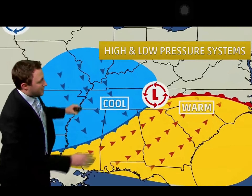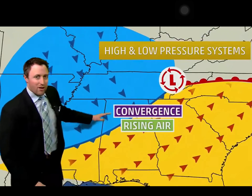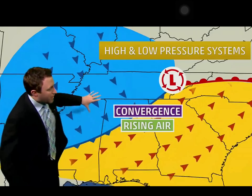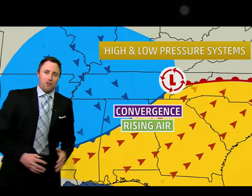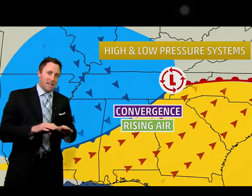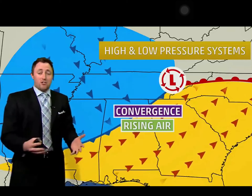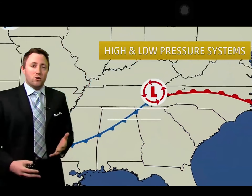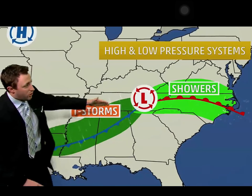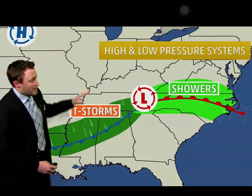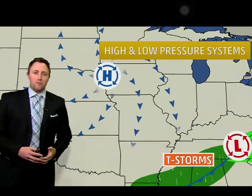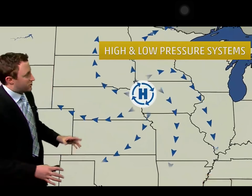Zooming in closer to where we get all the precipitation: you've got air coming down from the north and air moving toward the north and east. This piles up as it gets close to the warm air mass and starts to lift. Where these winds meet, we call that convergence — the meeting of air. It has nowhere to go so it goes up, and that's where we get clouds and rain. Usually along the cold frontal side we see thunderstorms, but on the warm frontal side you see broad areas of rain showers and cloudiness.